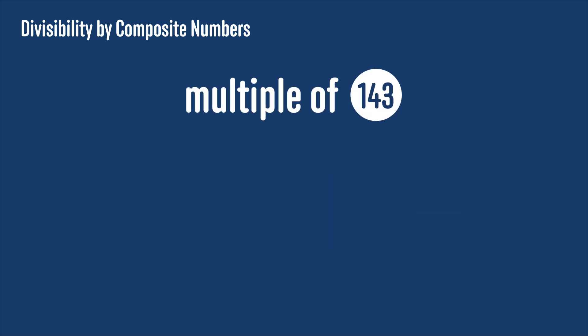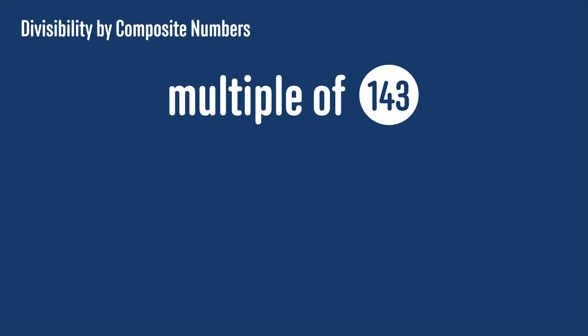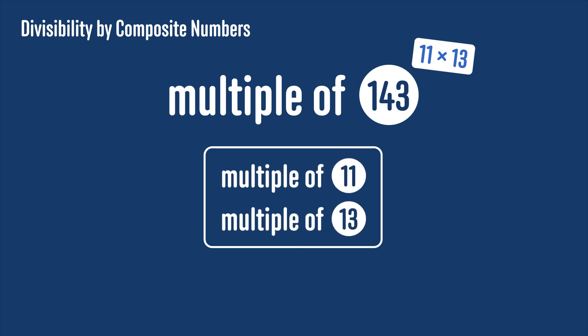If you want to check if a number is a multiple of 143, you can notice that 143 is 11 times 13, and since 11 and 13 are both prime, we can check if the number is a multiple of 11 and a multiple of 13. If it's both, then it will be a multiple of 143.